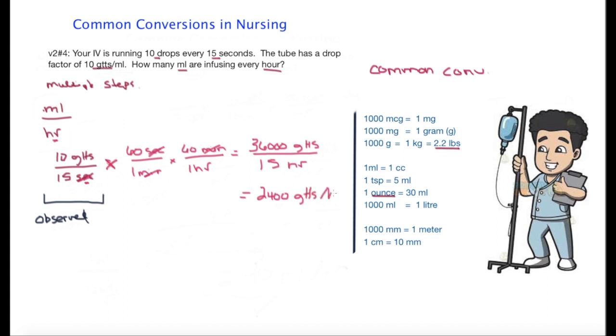Now that's just the first step. The second thing is I need to convert those drops into mils. In my stem question I see that my tube has a drop factor of 10 drops per mil. I'm going to use that to solve my equation. So I'm going to take the value of 2,400 drops per hour and I'm going to multiply that by the relationship of 1 mil is 10 drops.